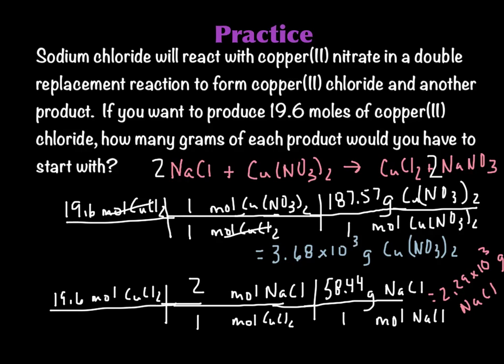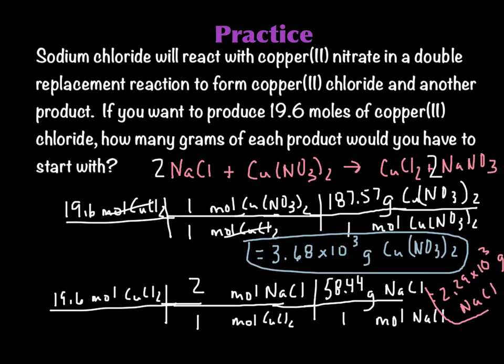This was a tough molar mass to calculate: 187.57 for Cu(NO₃)₂. I calculated the answer to be 3.68 times 10 to the third grams of Cu(NO₃)₂ — make sure you have those labels on there each time. And for the bottom one: 2.29 times 10 to the third grams of NaCl.